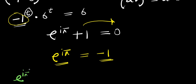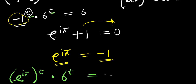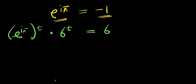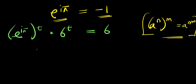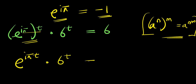So the equation becomes: e^(iπ) raised to the power of t, times 6 to the power of t, equals 6. We then apply the identity (e^n)^m = e^(n times m), multiplying the exponents out to get e^(iπt) times 6^t equals 6.